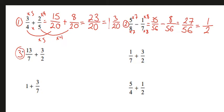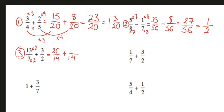Number 3, we have 13 over 7 plus 3 over 2. The least common denominator here is going to come from when we multiply the two denominators. 7 times 2 is 14. This is going to be the new denominator. And what we do to the bottom, we also need to do to the top. 13 times 2 is going to be 26.